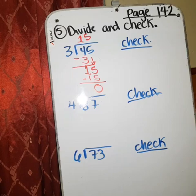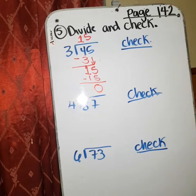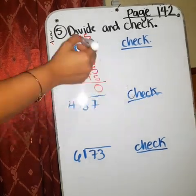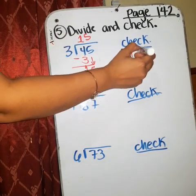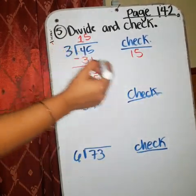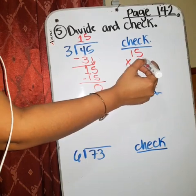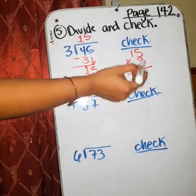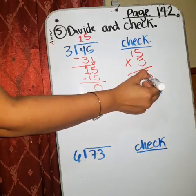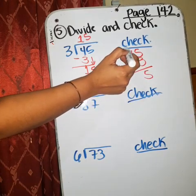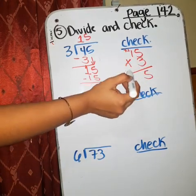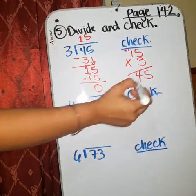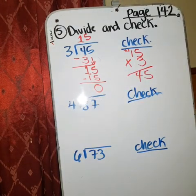So, how you have to check that? ¿Cómo vamos a chequear? With that quotient? Fifteen. And the divisor? Three. Three times five? Fifteen. Plus one. Three times one? Three. Plus one? Four. Got it?